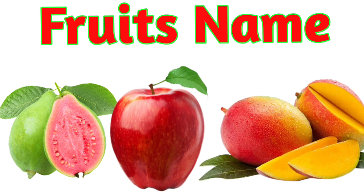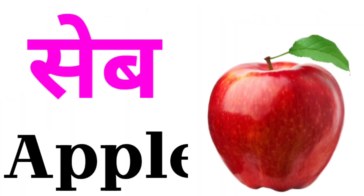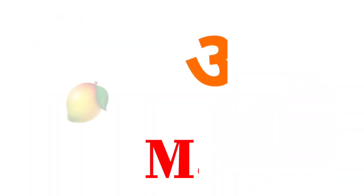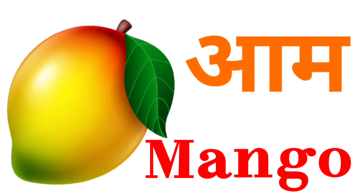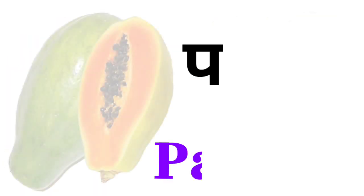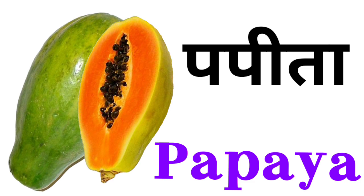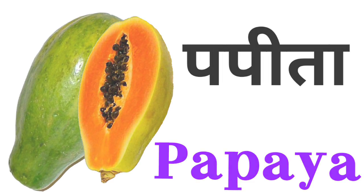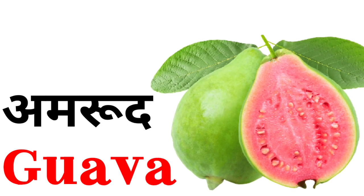Hello friends, today we are going to learn five fruits names. Apple — apple means 'save'. Mango — mango means 'aam'. Grapes — grapes means 'angur'. Papaya — papaya means 'papita'. Guava — guava means 'amrood'.